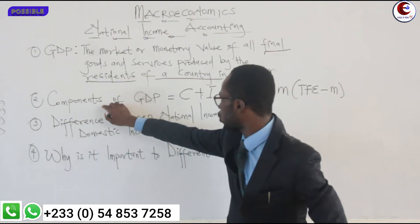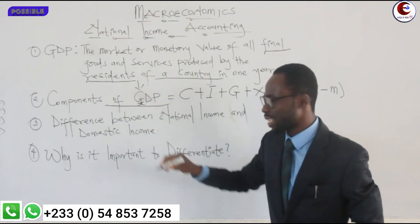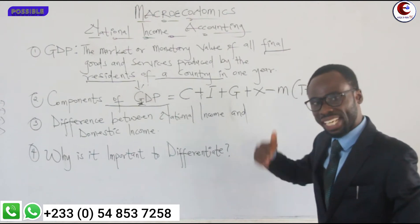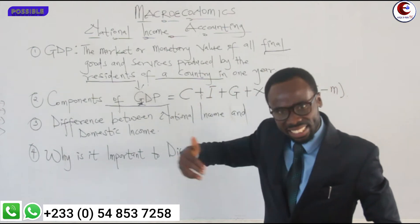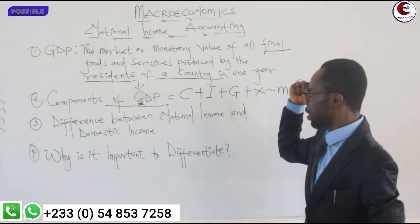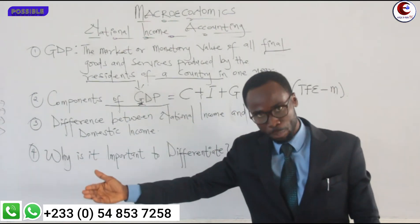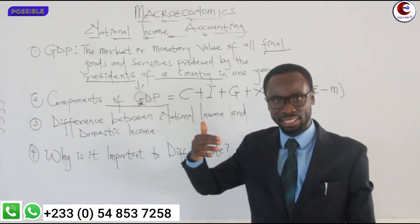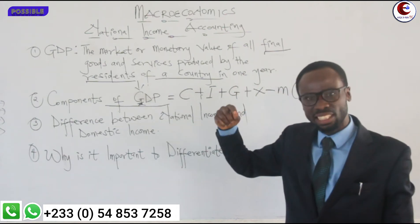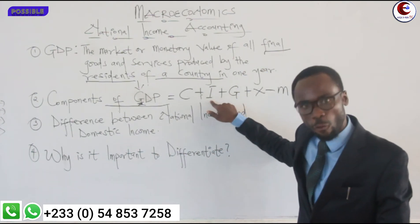If you get a question where the investment figure is in net form or net value, you must convert it into gross. How do you convert net investment into gross? By adding the depreciation value given in the question to the net capital formation figure. So: gross investment equals net capital formation plus depreciation.